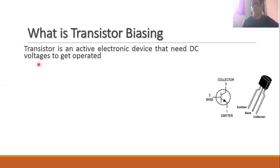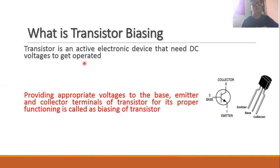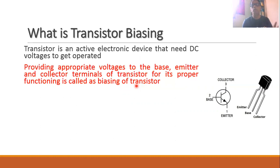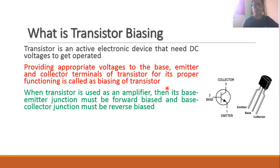Whenever we have an active device, it will need proper DC voltages in order to get it working. So whenever you want to operate a transistor, you need to apply proper base voltage, proper collector voltage, and proper emitter DC voltage. When you provide appropriate voltages to the base, emitter, and collector terminals of the transistor so that it works properly, this is called biasing of the transistor.